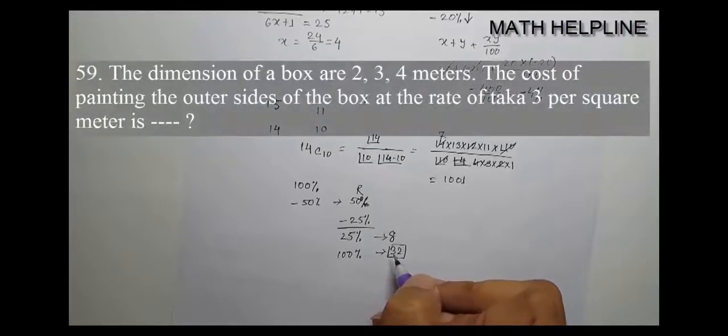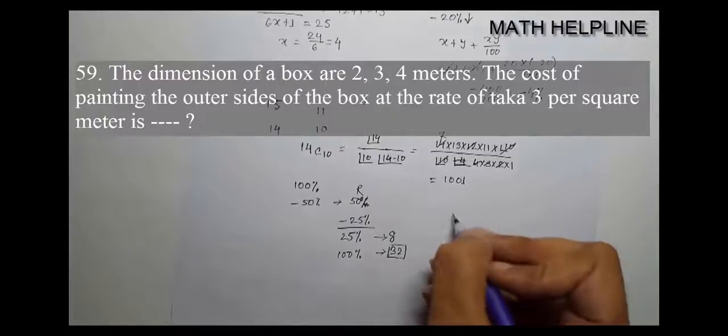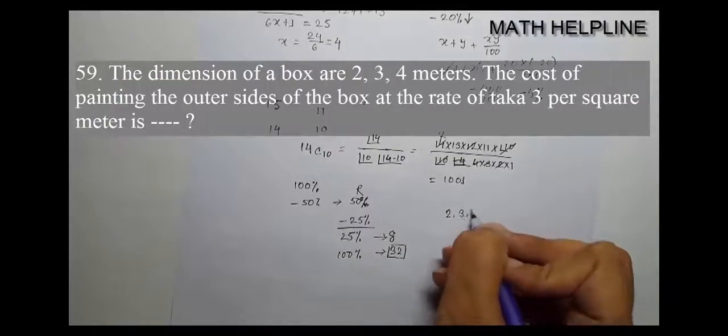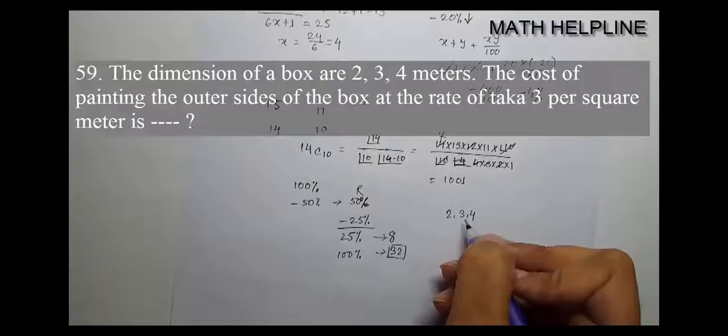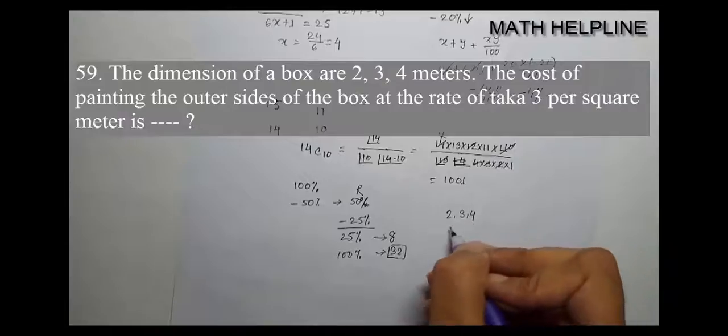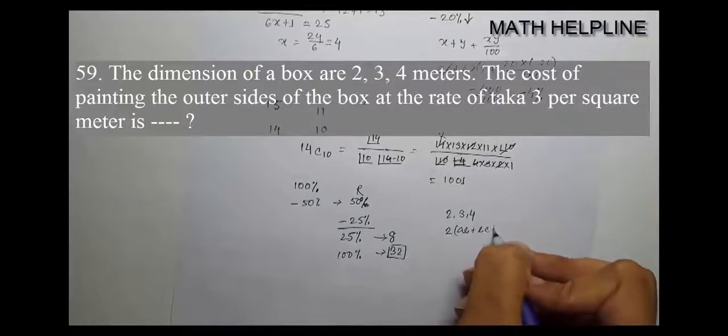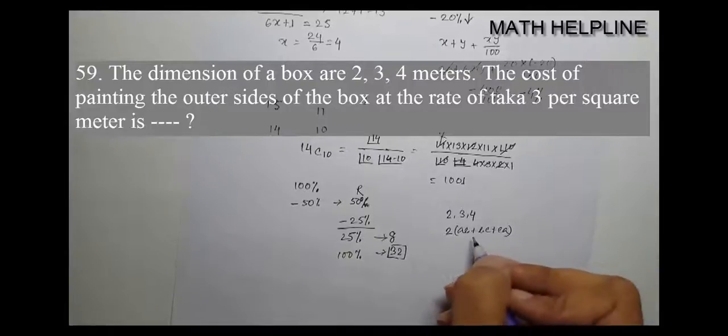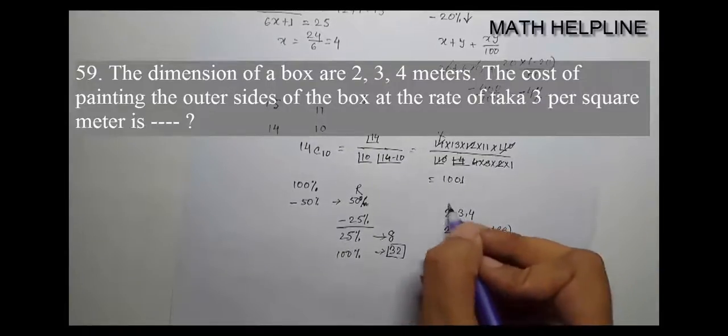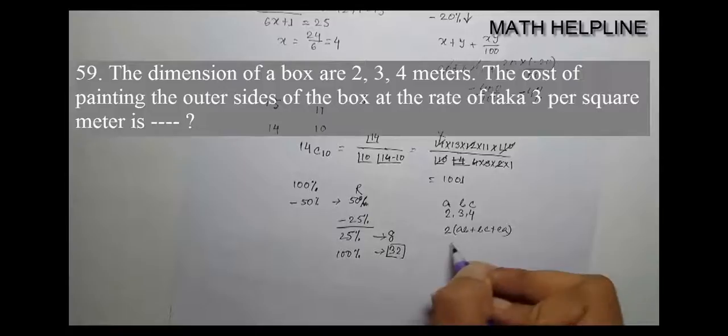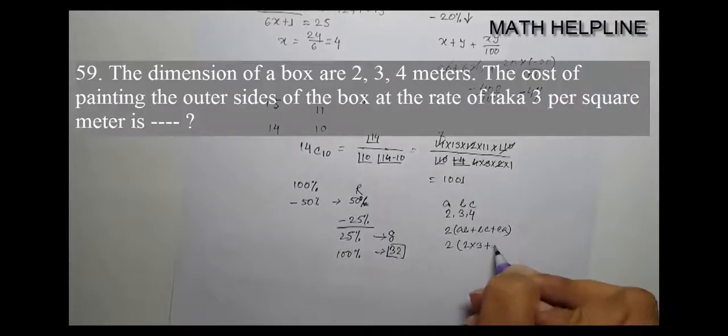Problem 59: The dimensions of a box are 2, 3, 4 meters. The cost of painting the outer sides of the box. For the outer surface area, we need the total surface area formula: 2 times (ab plus bc plus ca). So we calculate 2 into 2 into 3 plus 3 into 4 plus 4 into 2.